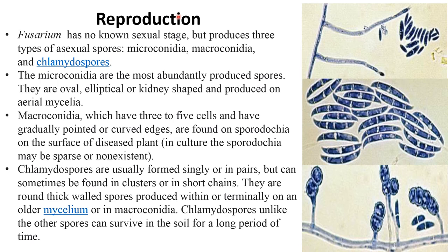Coming to the reproduction. In the case of Fusarium, it has been known to have no sexual reproduction or sexual stage, but produces three types of asexual spores: microconidia, macroconidia, and chlamydospores.